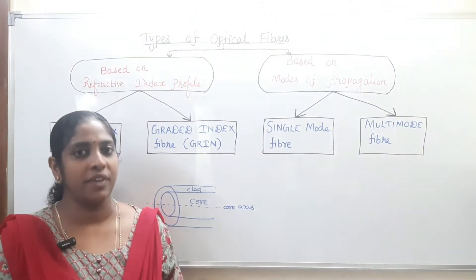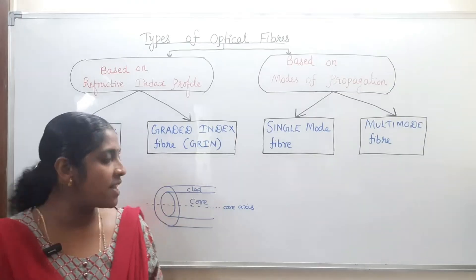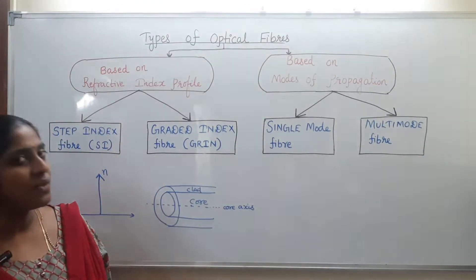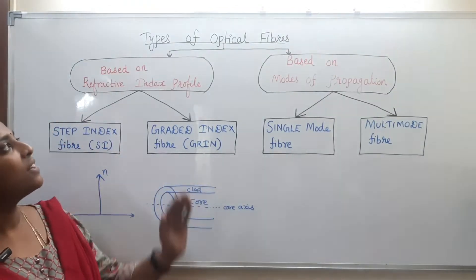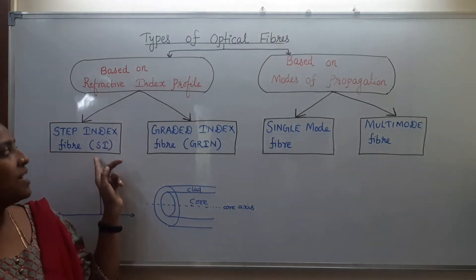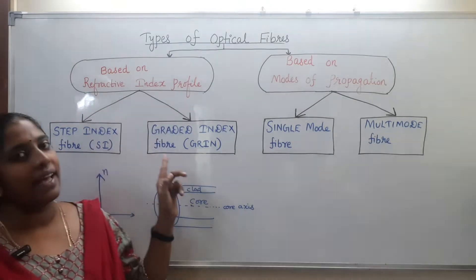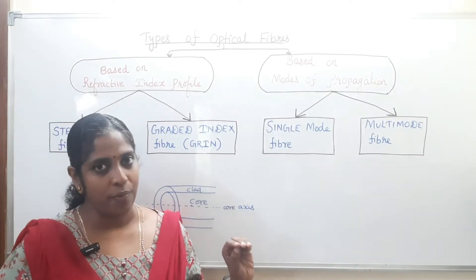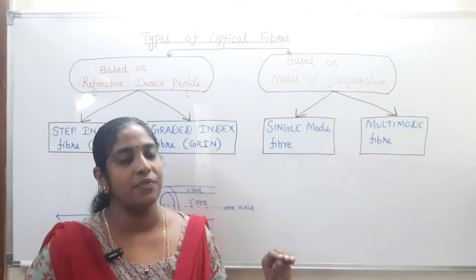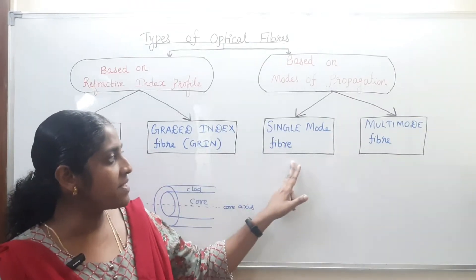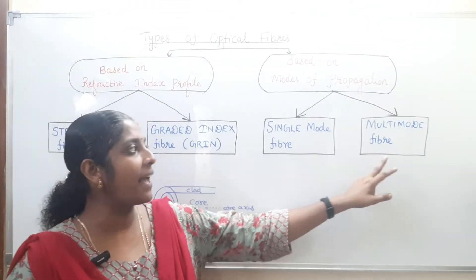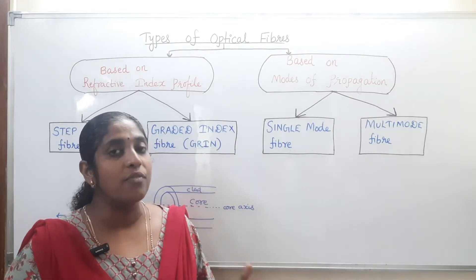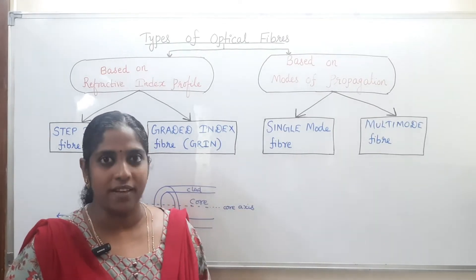Based on the variation of the refractive index with respect to the distance from the core axis, we can classify optical fibers into step index fiber and graded index fiber. Based on modes of propagation, we can classify them into single mode fiber and multi-mode fiber. Mode means the number of paths of light passing through the optical fiber.